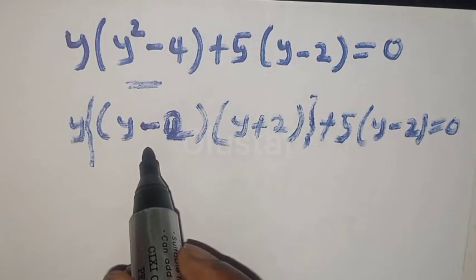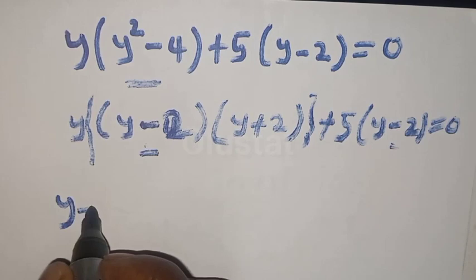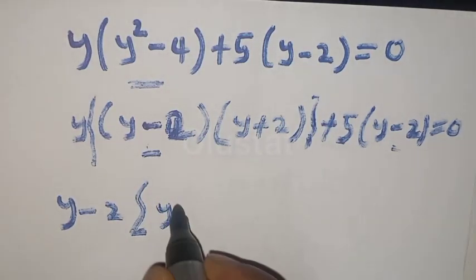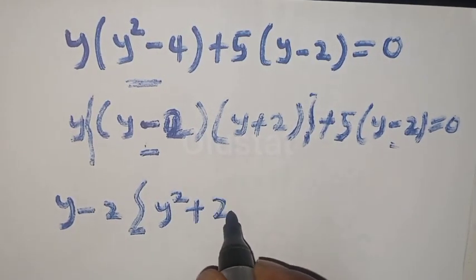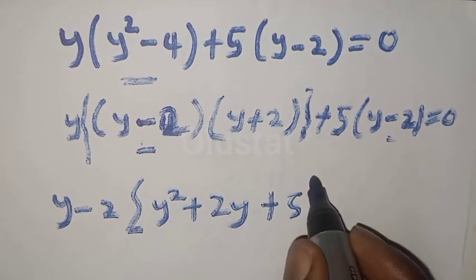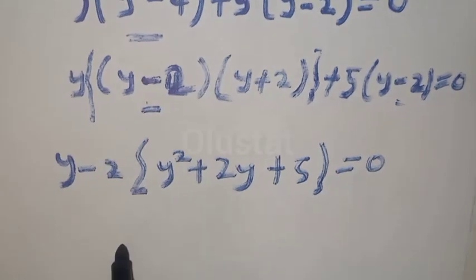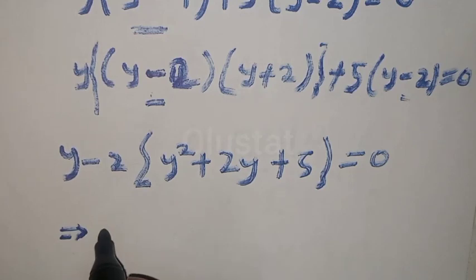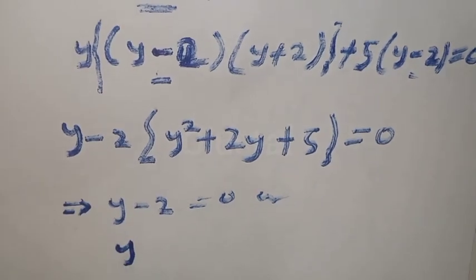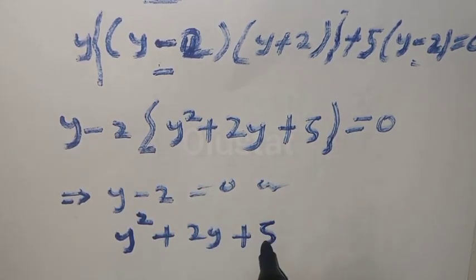Something is common — let's factor y minus 2 out. We have y minus 2 into y times y, giving y squared plus 2y, that is y times 2, plus 5 is equal to 0. So we have y minus 2 times the quantity y squared plus 2y plus 5 equals 0.